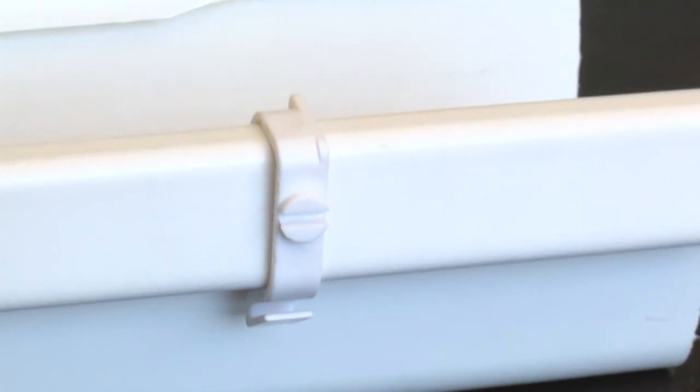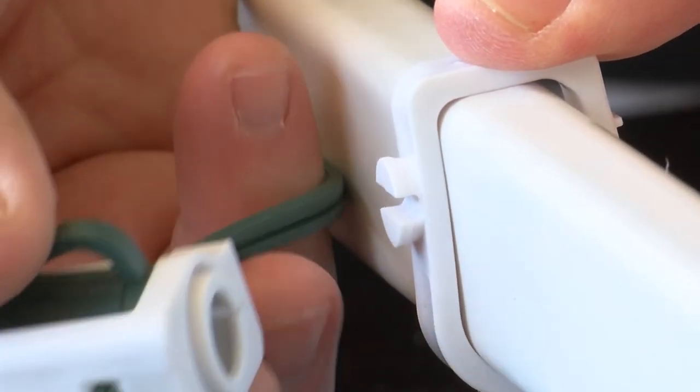Note at the bottom of the gutter snap is a slot that enables you to hang an additional string light to the gutter snap.